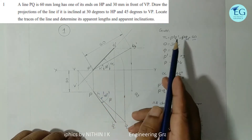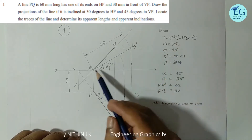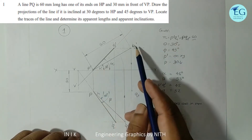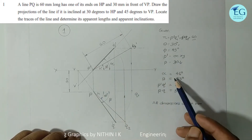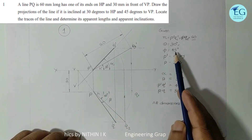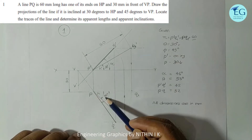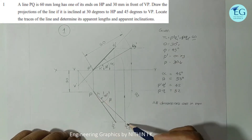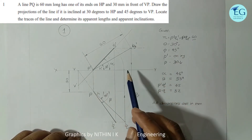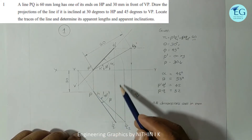Next, draw the inclination with HP. The true length P'Q1' is drawn at 30 degrees to XY. Then draw the inclination with VP: P'Q2' is drawn at 45 degrees. These steps each carry 4 marks, giving additional red marks for correct construction.